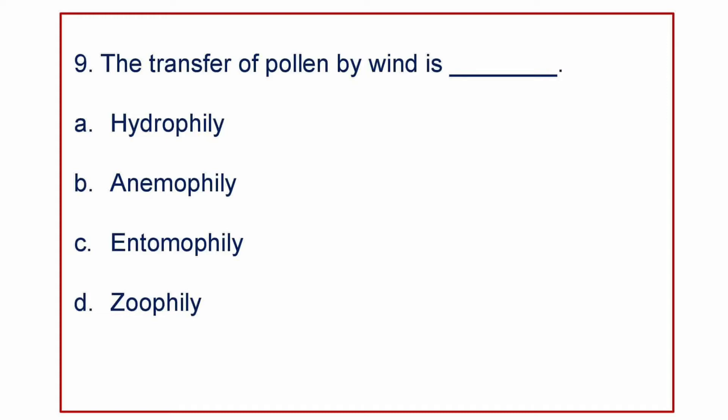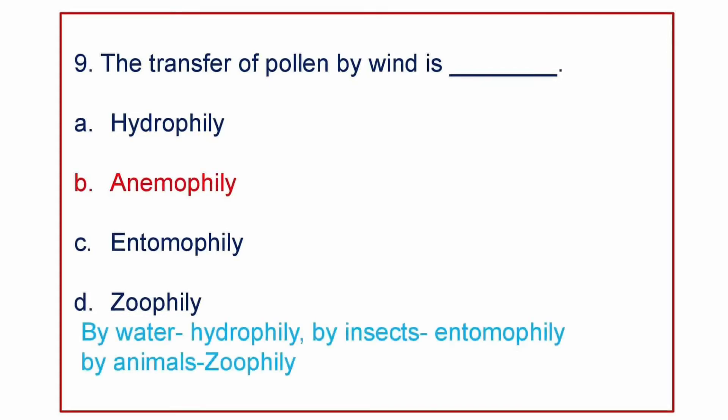Next question: the transfer of pollen by wind is — A) Hydrophily, B) Anemophily, C) Entomophily, or D) Zoophily. The answer is Anemophily. If the transfer of pollen is by water, it is Hydrophily; if by insects, it is Entomophily; and if by animals, it is Zoophily.